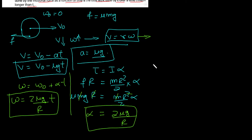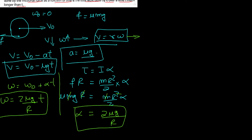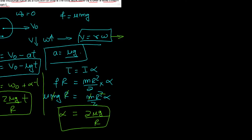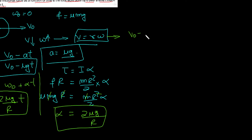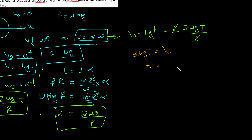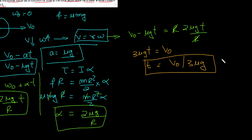Now we apply the pure rolling condition v = rω, and substitute our expressions for v and ω. So v₀ - μg·t = r·(2μg·t/r). The r cancels, giving v₀ - μg·t = 2μg·t, so 3μg·t = v₀, therefore t naught = v₀ / (3μg). This is the time after which pure rolling begins.